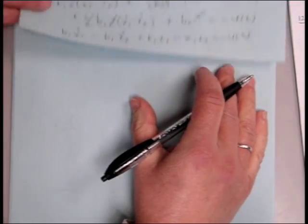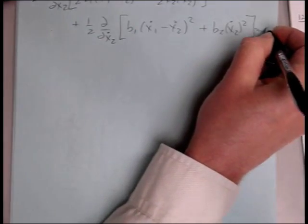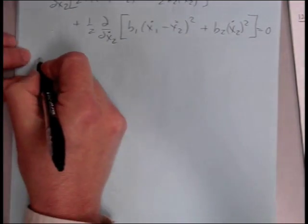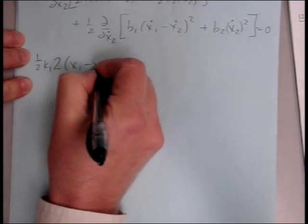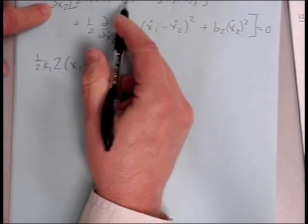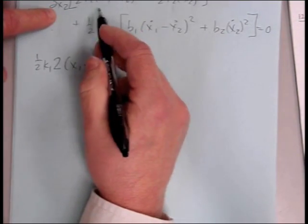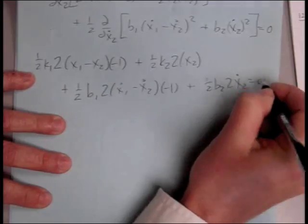We do our x2 application, partial with respect to x2 dot then, and this one has no forcing function, so it will be equal to 0. Taking these partial derivatives, we'll get one half k1, taking the derivative of the outside, 2, x1 minus x2, and then derivative of the inside, partial of x1 minus x2 with respect to x2 is a negative 1, so we're going to get negative 1 in this one, equals 0.